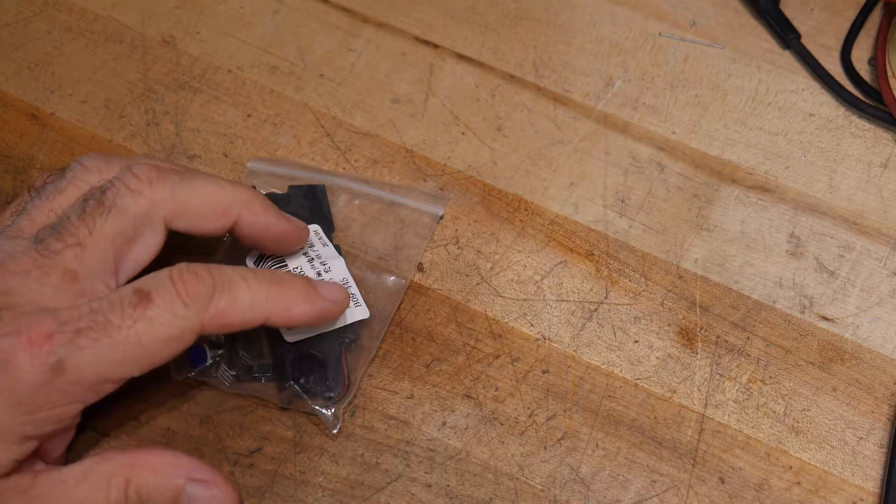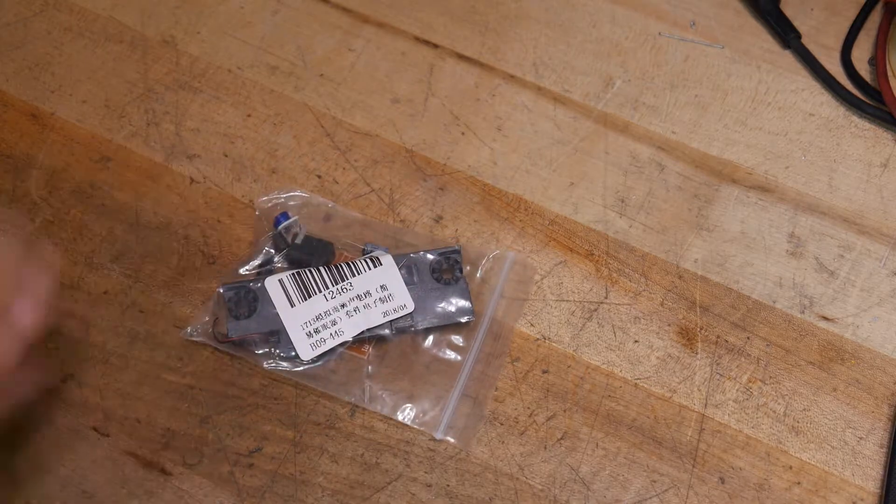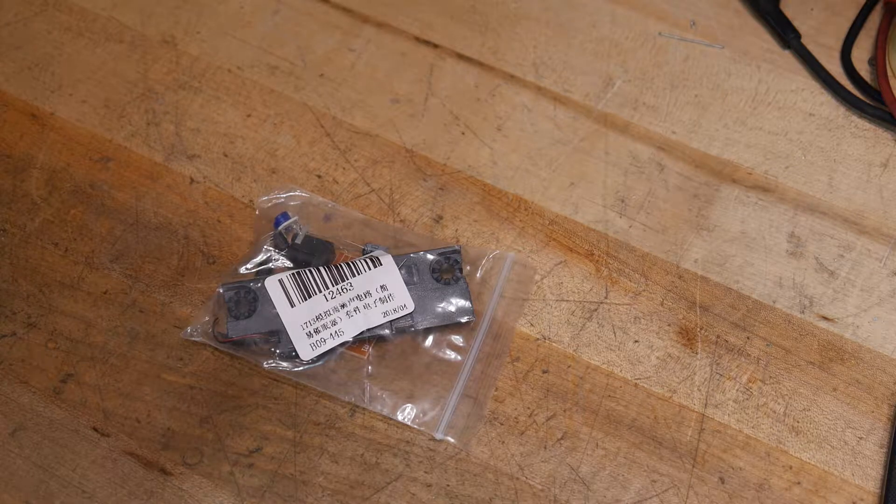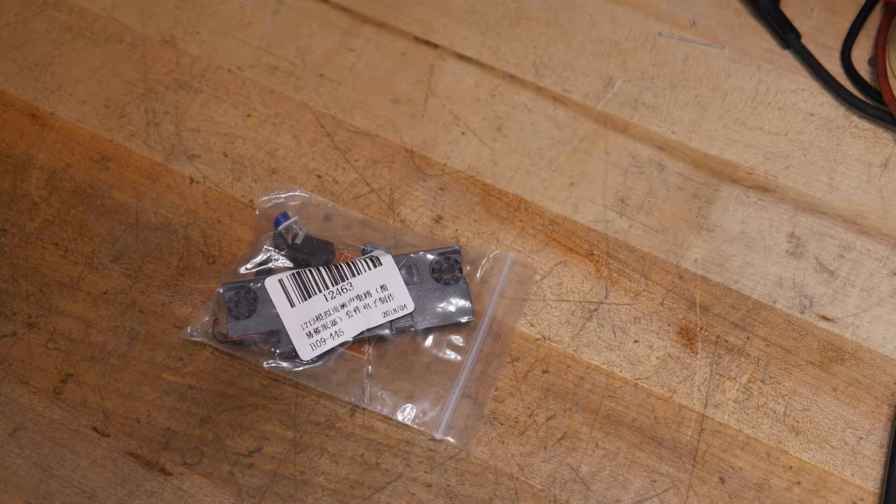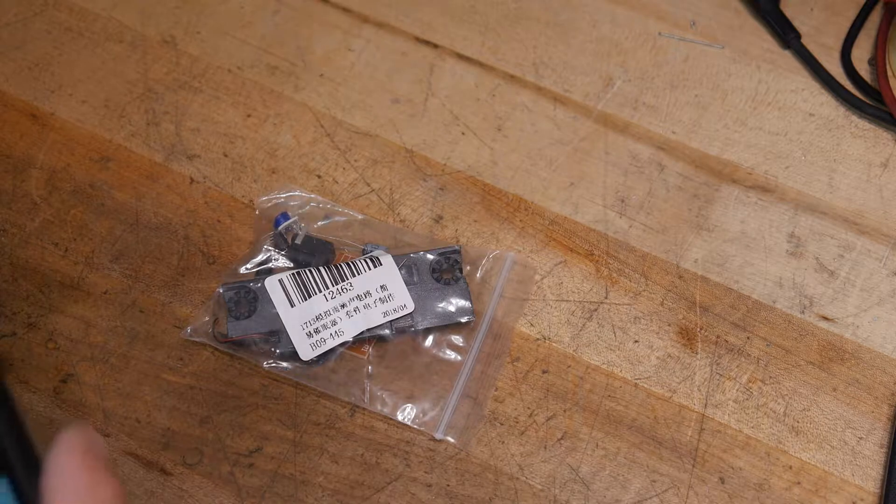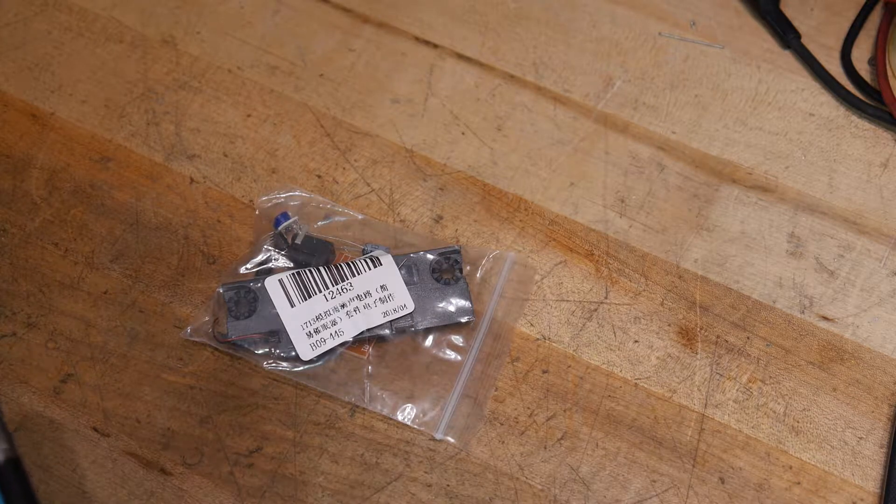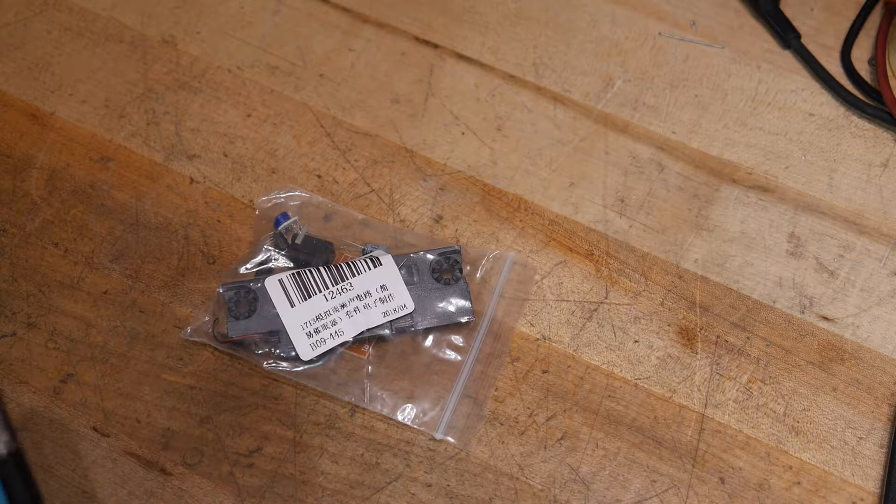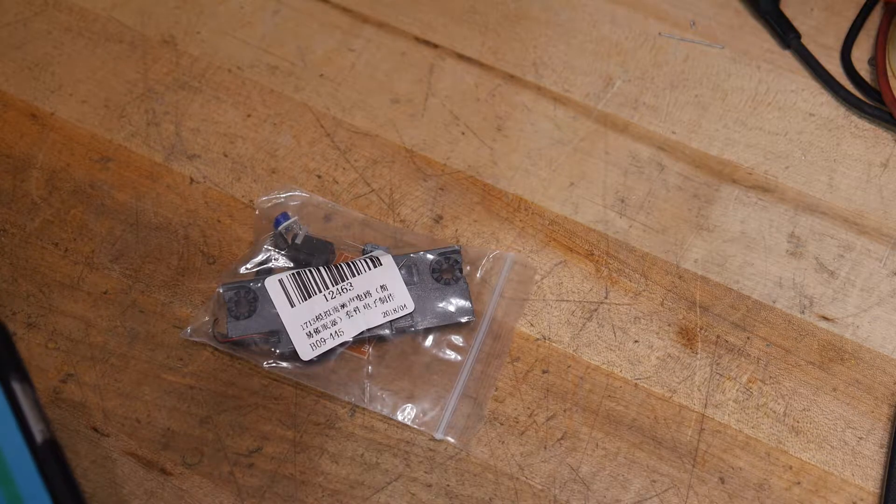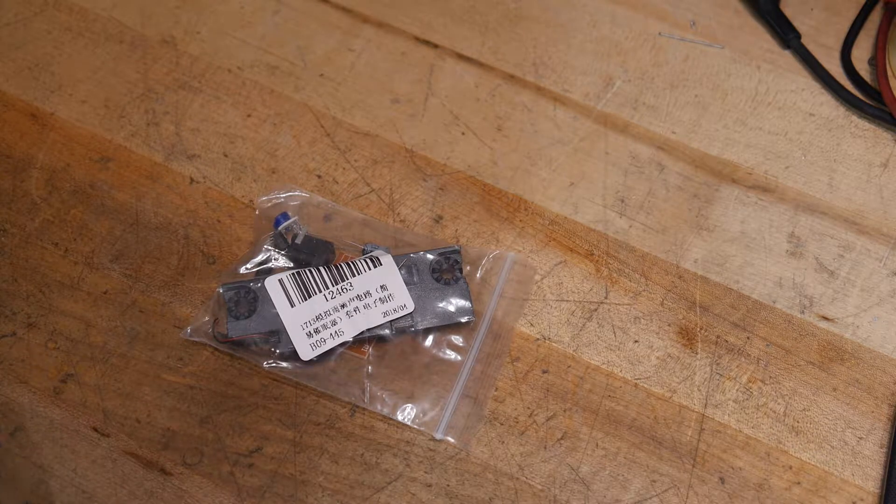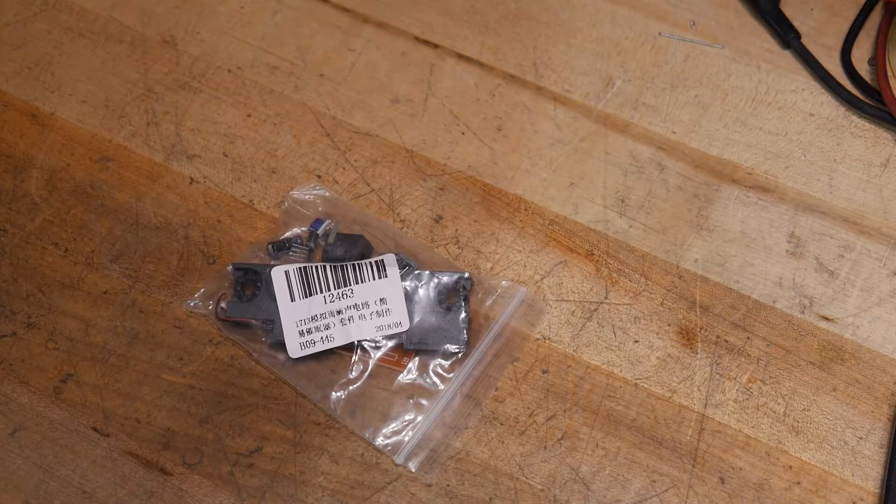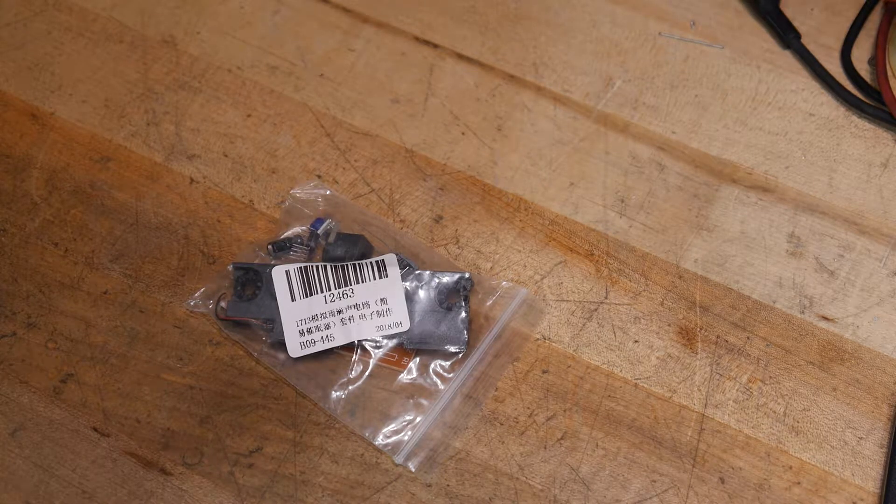All right, another kit from China. This one is pretty simple in circuitry but has a very crazy description. It says it's a 555 analog raindrop circuit kit by stable hypnotic module, easy DIY kit raindrop circuit. I don't know if it's supposed to sound like raindrops, blip blip blip, or by stable hypnotic module.